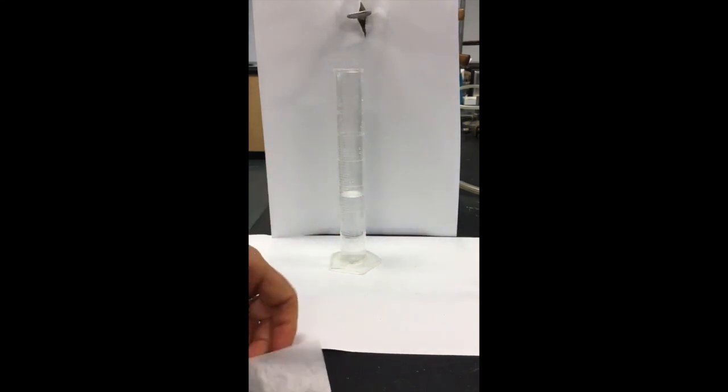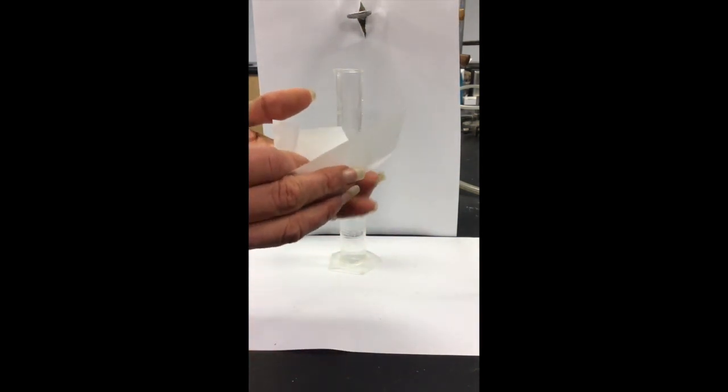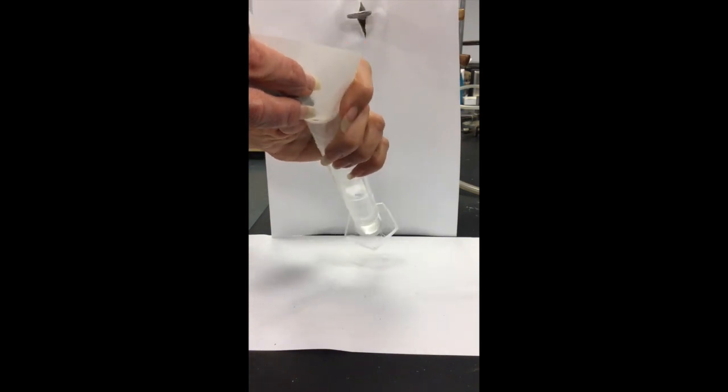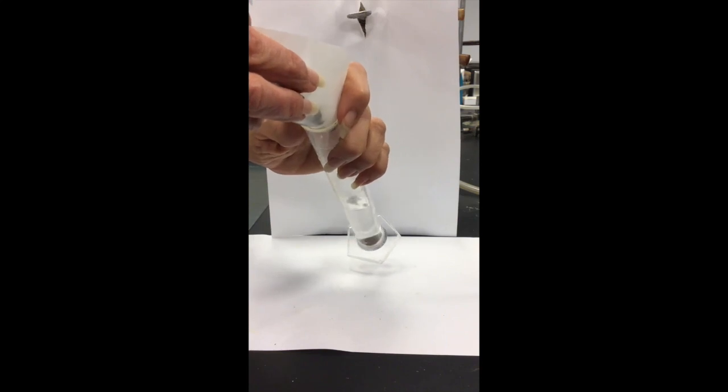Now what we're going to do is transfer our gravel into the graduated cylinder. I want to do this at an angle so that I add it in slowly and don't splash any of the water out.